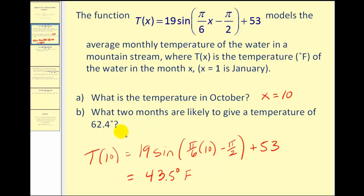Now the next one says, what two months are likely to give a temperature of 62.4 degrees? Let's take this on the next screen and see if we can solve that.